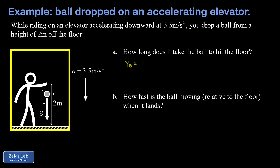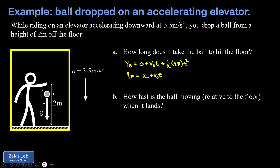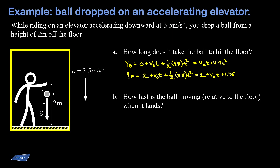We set the two y-coordinates equal and solve for t. For the ball, the initial y-value is zero, then we add the v₀t term and, using downward as positive, plus one-half times g (9.8 m/s²) times t squared. For the y-coordinate of the floor, the initial position is 2 in our coordinate system, the initial velocity is the same v₀ as the ball, and its acceleration is the smaller 3.5 meters per second squared. So the ball's position is v₀t + 4.9t², and the floor's position is 2 + v₀t + 1.75t².